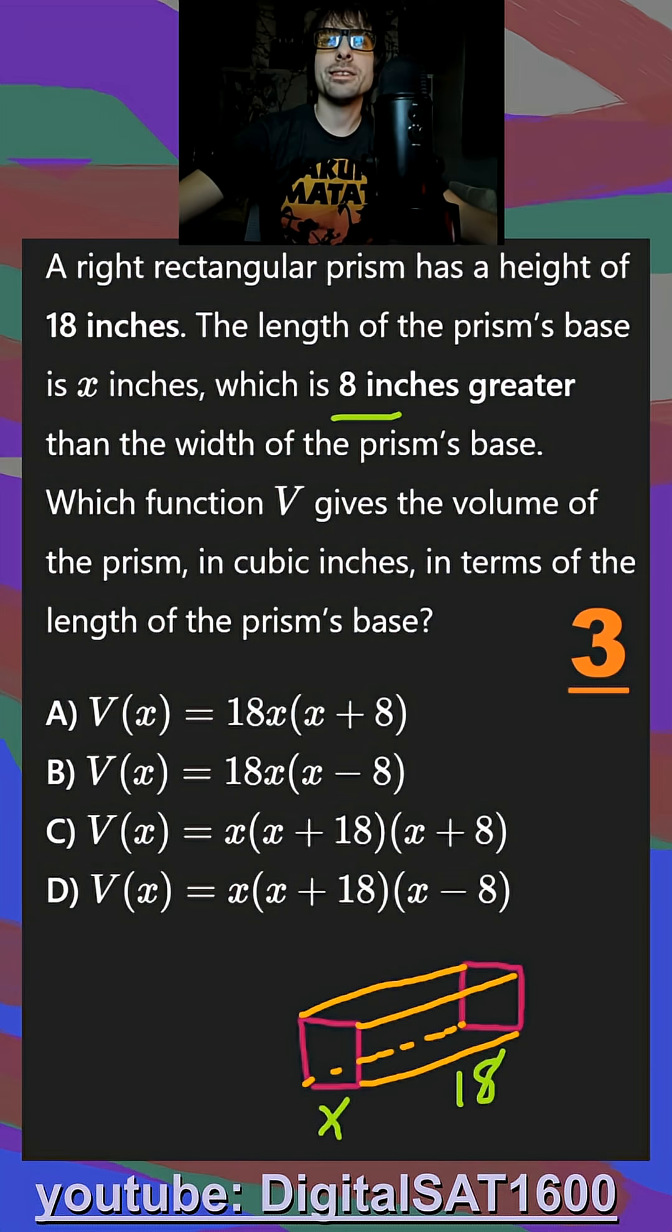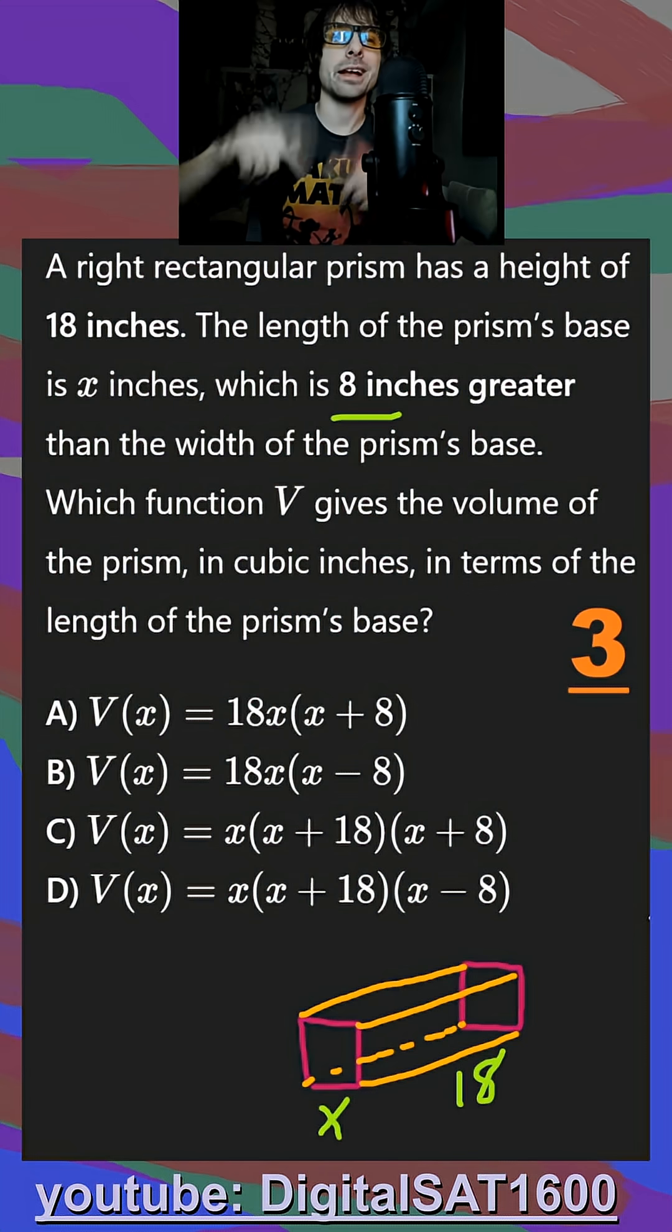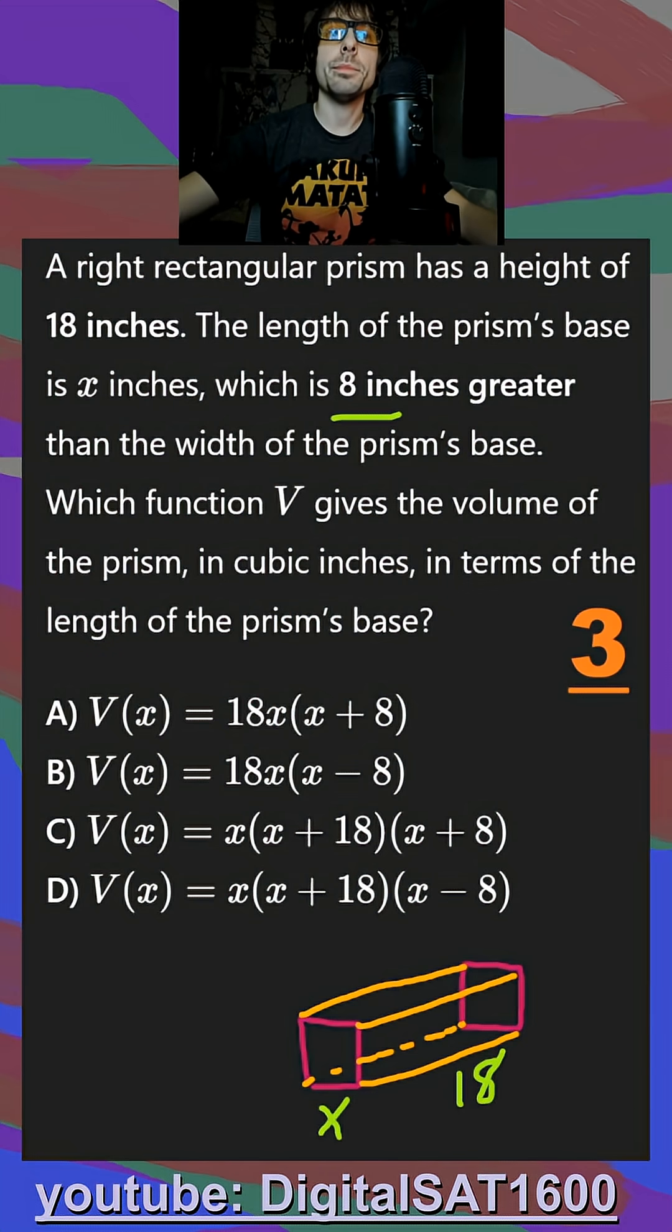So this is one of the trickier ways that they convey our three sides, and that is, normally we would see 8 greater, and we would think, oh, well, that's going to be x and x plus 8. The problem is,